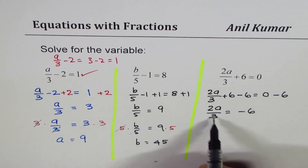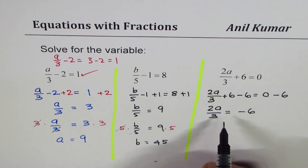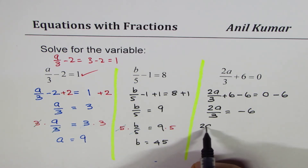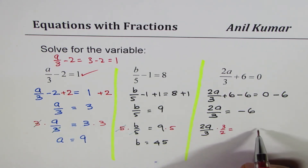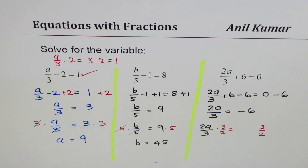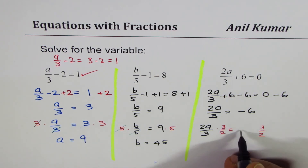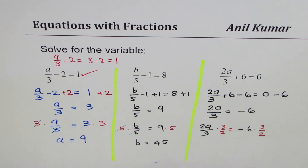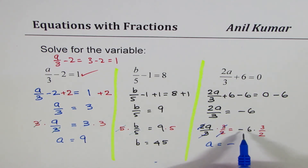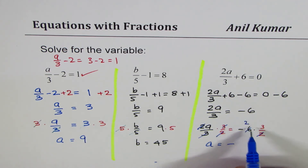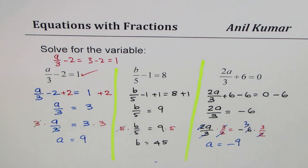Now what do we do with 2a over 3? We'll multiply by 3 and divide by 2 on both sides. On the left, the 2 gets cancelled and the 3 gets cancelled, leaving just a. On the right, we have minus 6 times 3 divided by 2. That gives us minus 9. So a equals to minus 9 is the result.